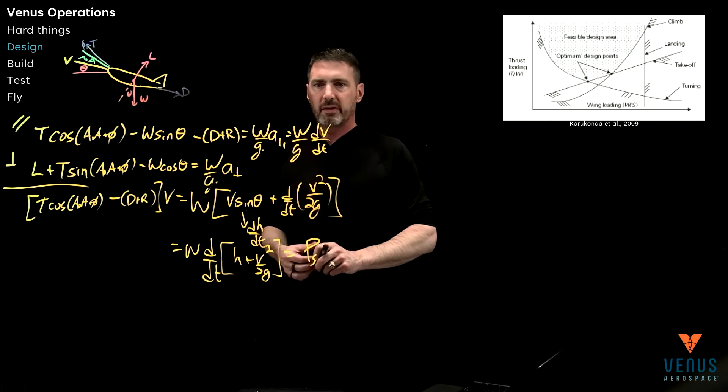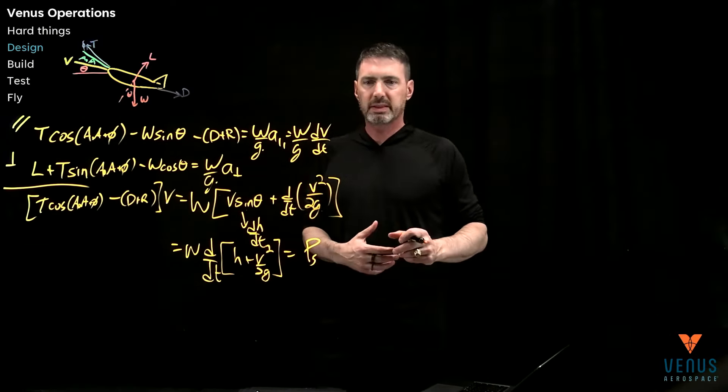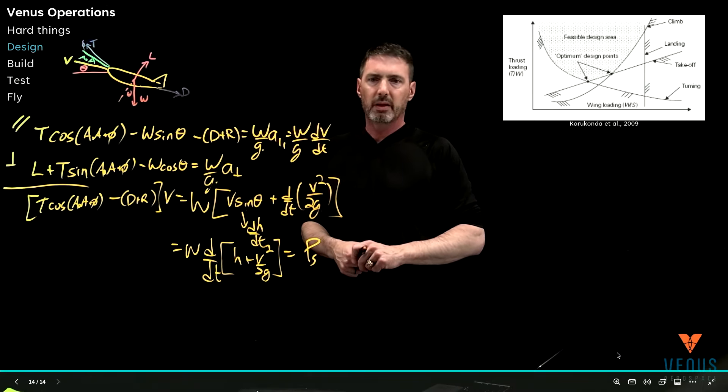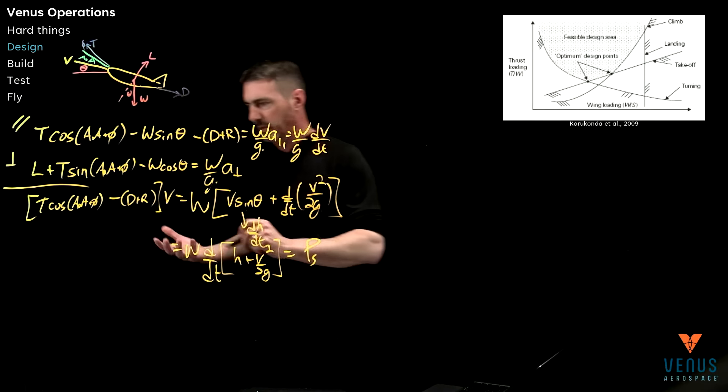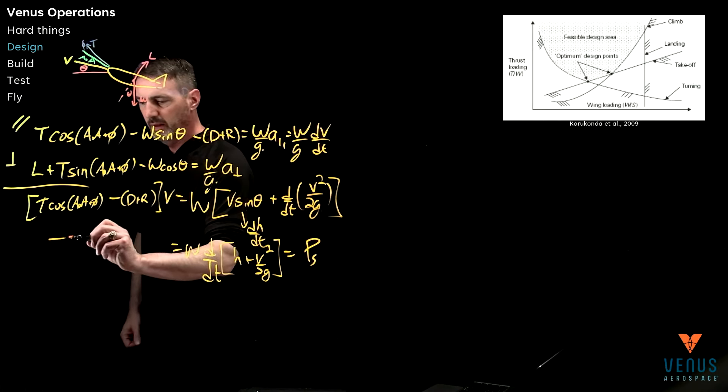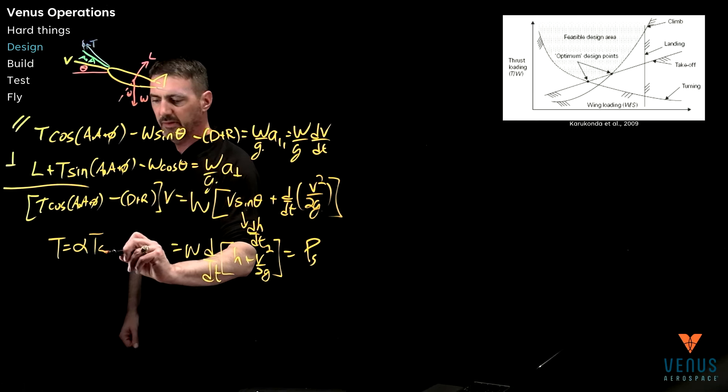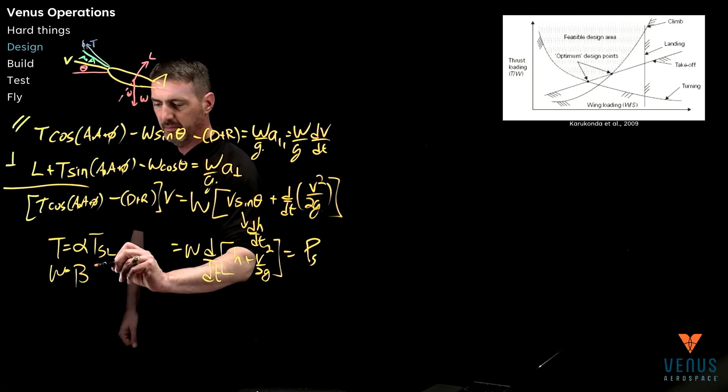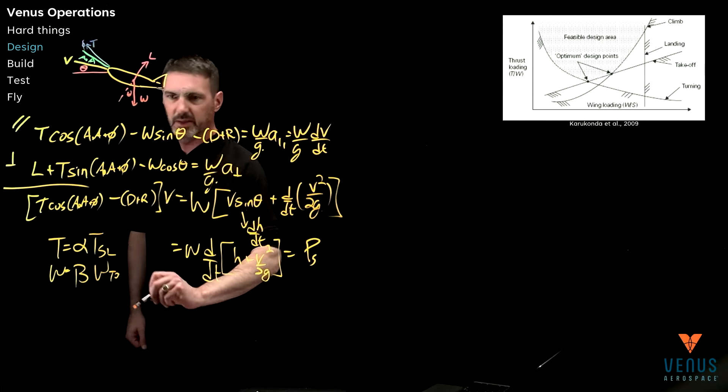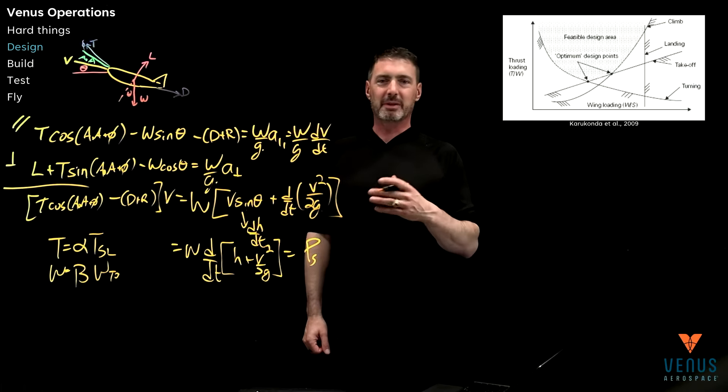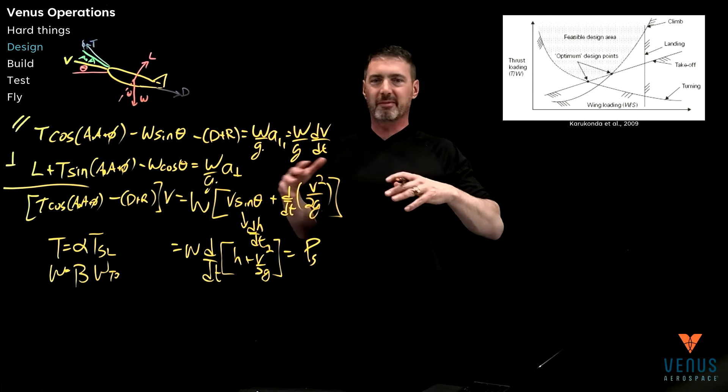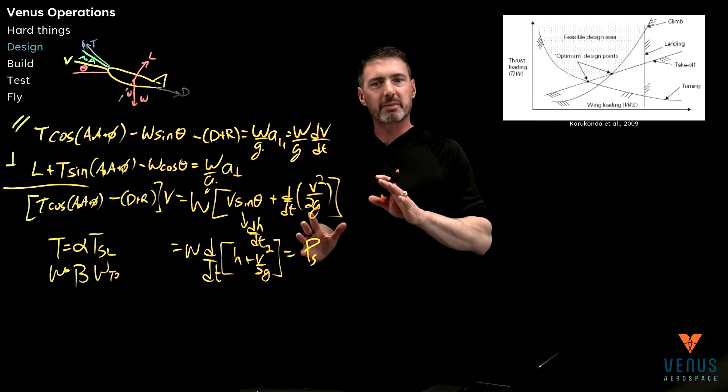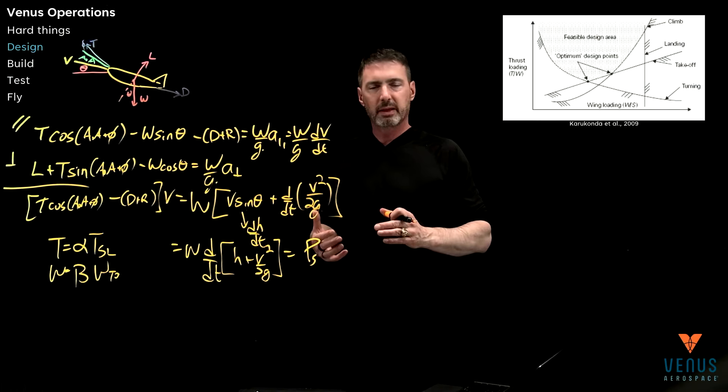All of this though is also the thrust as well as the weight of the vehicle, of course, is changing. We insert this nomenclature here as well. The thrust is alpha times the sea level thrust, and the weight is beta times the takeoff weight. The problem is it's everybody's favorite Greek letters. Even in this section, maybe next time I may be using alpha and beta to mean something else. I'll try to be explicit when we're doing that.